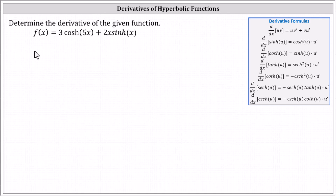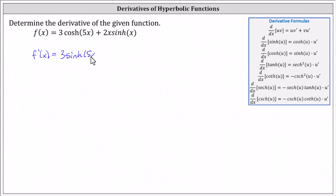This indicates that f prime of x equals the derivative of three hyperbolic cosine five x, which is three hyperbolic sine five x, times the derivative of five x, which is five.